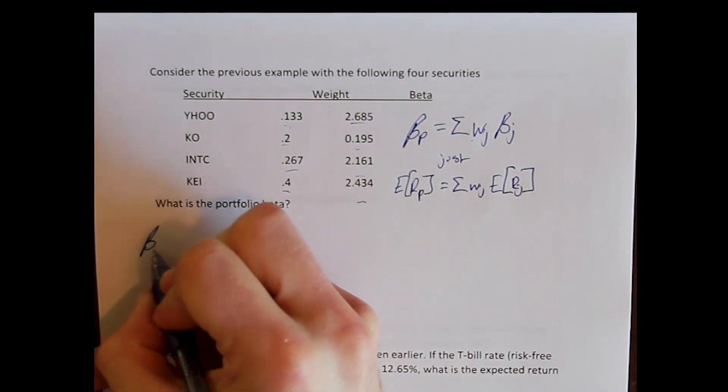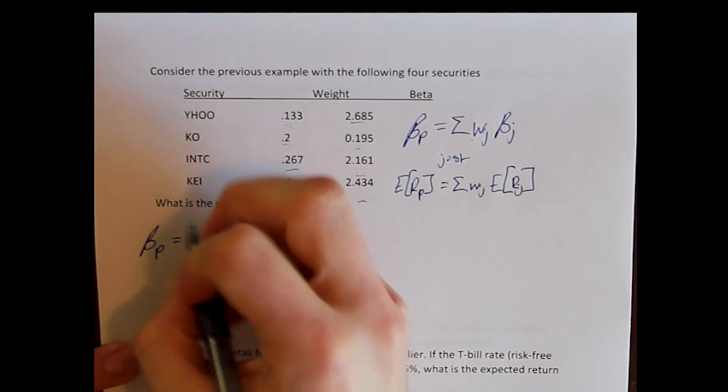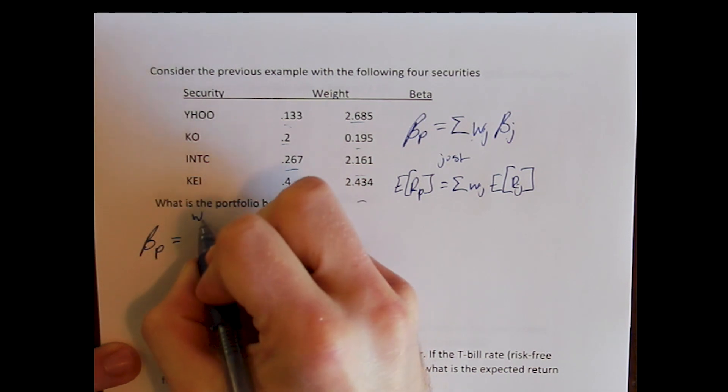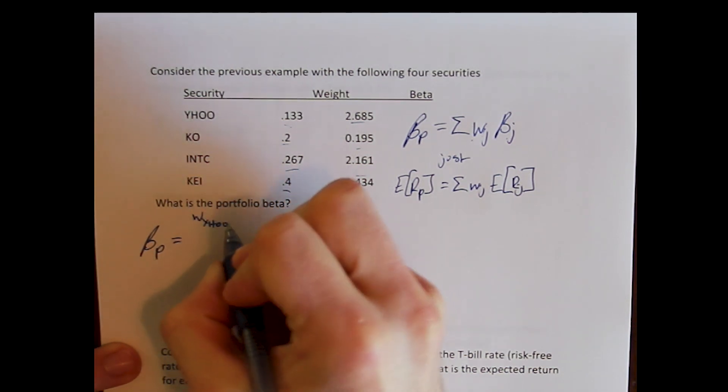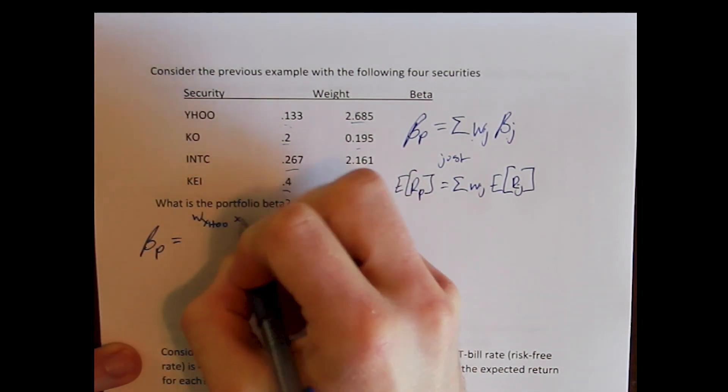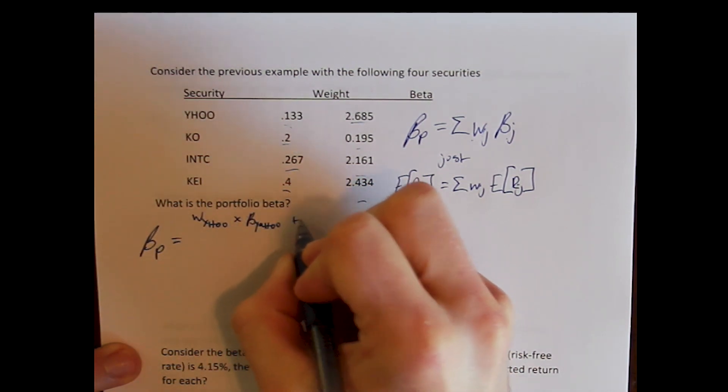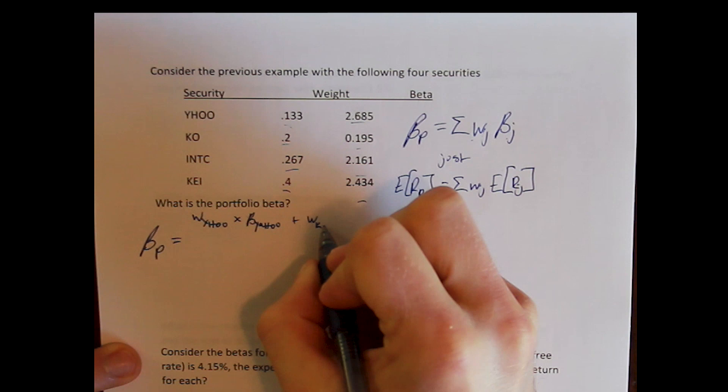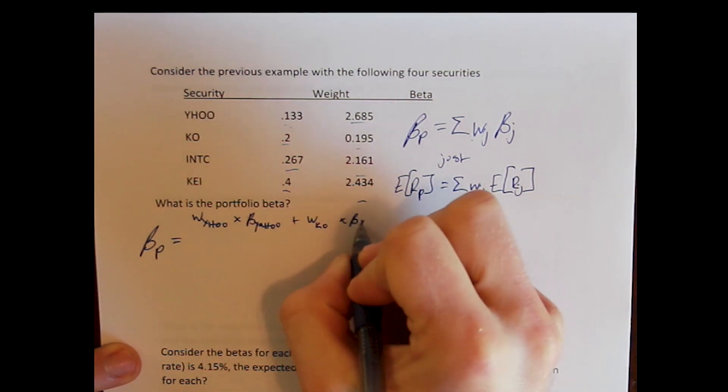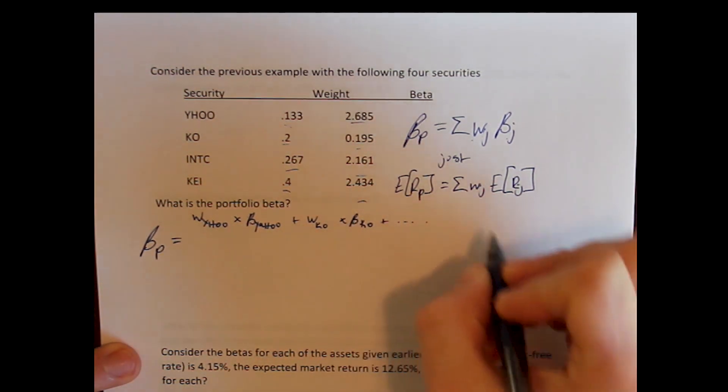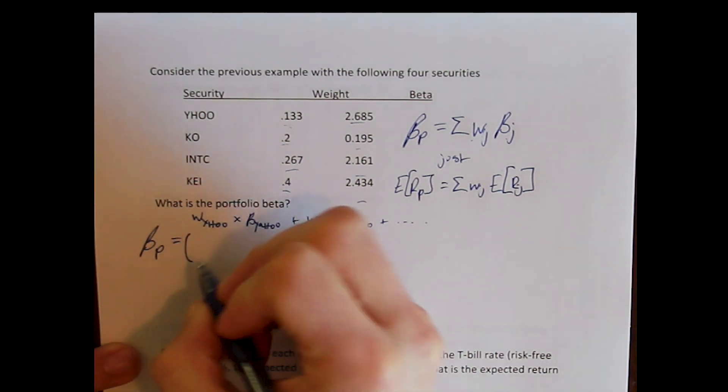So we can calculate the beta of the portfolio. We could have the weight of Yahoo times the beta for Yahoo plus the weight of Coca-Cola times the beta for Coca-Cola plus all the way out. So we can do that here.